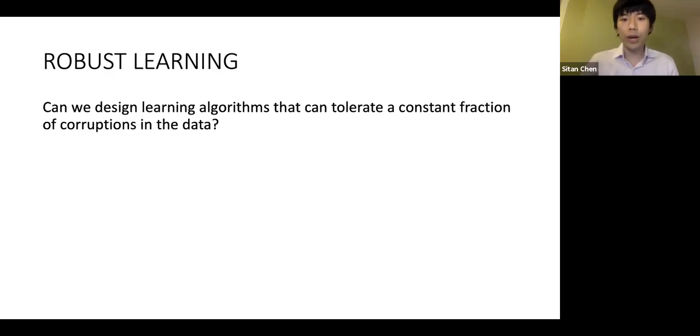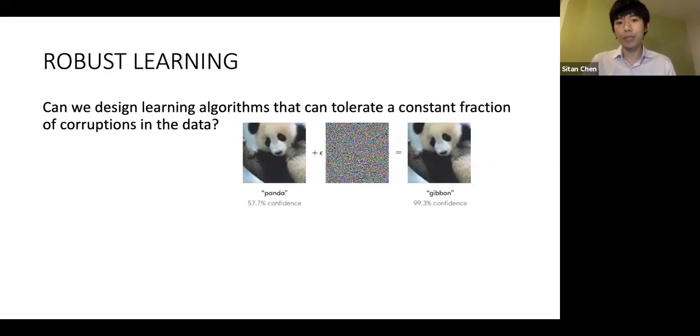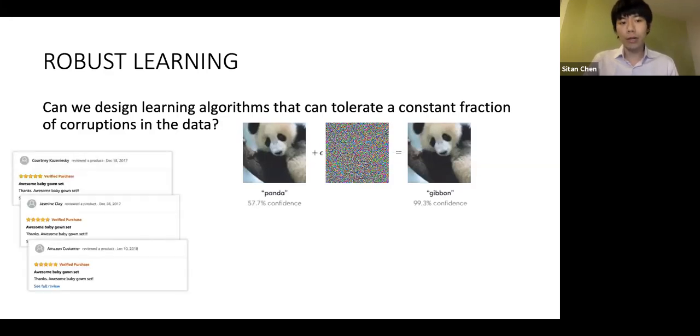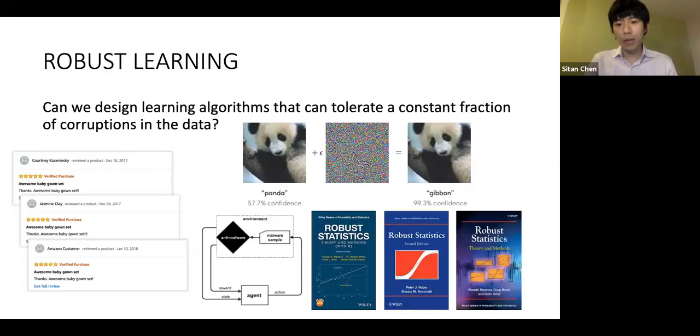Such corruptions arise in the context of adversarial examples for deep nets, data poisoning attacks on recommendation systems, and malware classifiers. More generally, the field of robust statistics has a long history of study dating back to seminal work of Tukey and Hubert in the 60s.